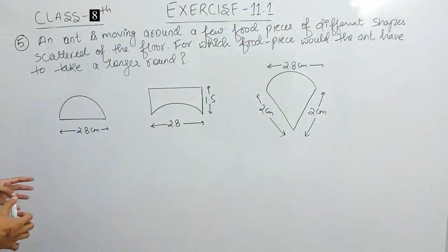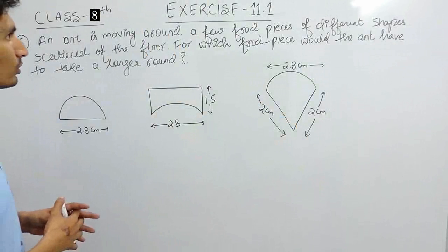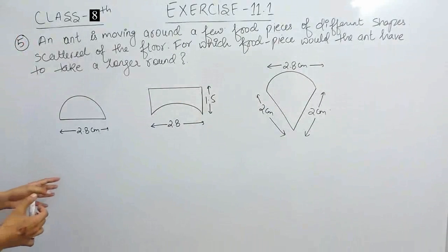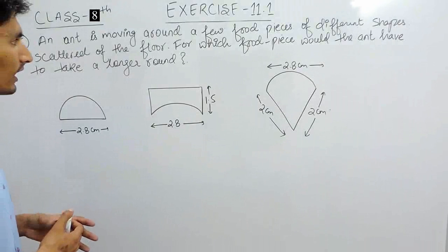The question is: an ant is moving around a few food pieces of different shapes scattered on the floor. For which food piece would the ant have to take a longer round?